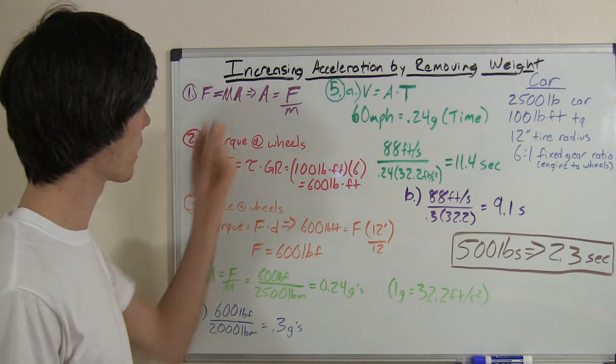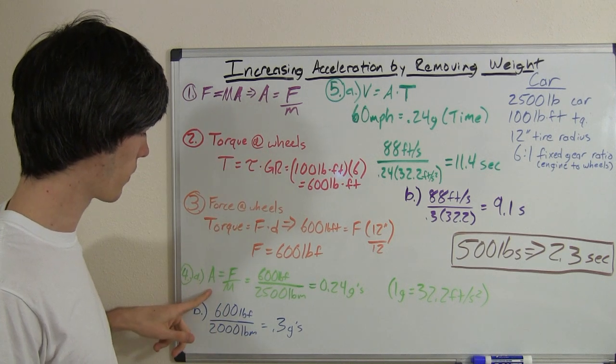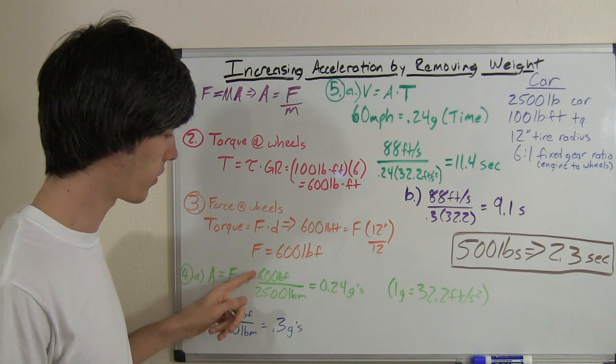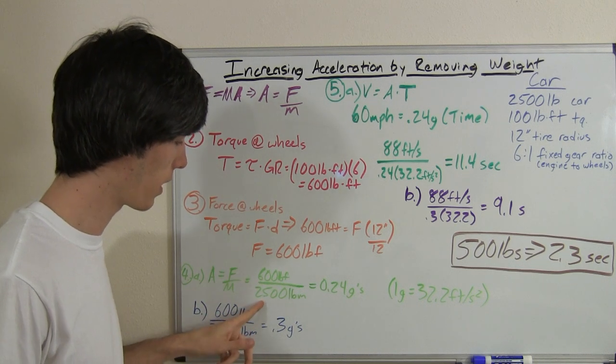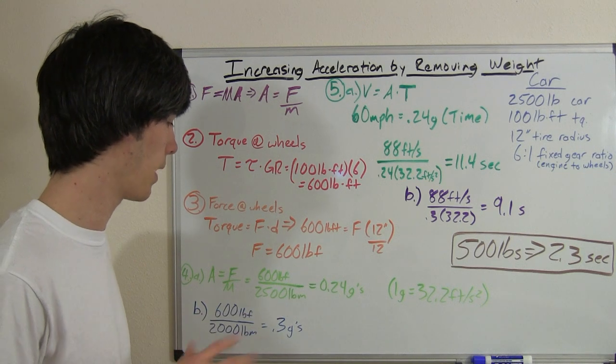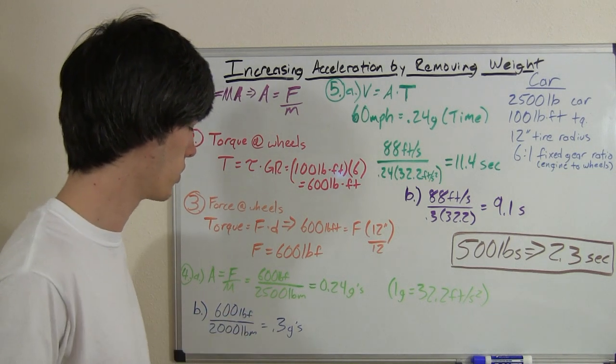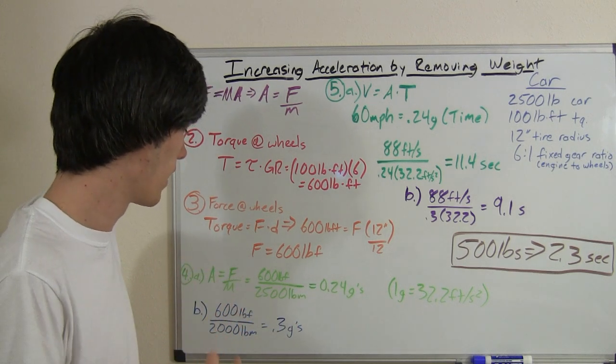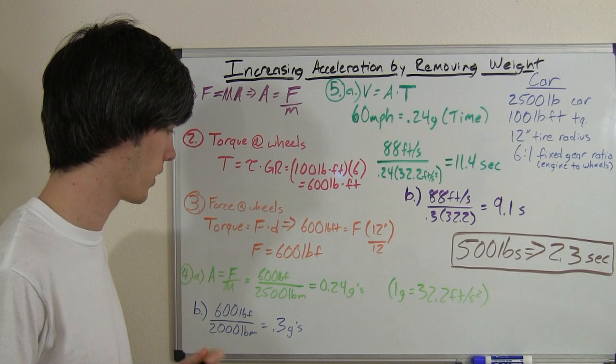All right. So back up here, step number four. We've got acceleration equals force divided by mass. We've got a 600 pound force divided by a 2,500 pound mass. Now 2,500 pound mass is kind of a not really a unit, but we are here on the outer shell of planet Earth at sea level, and we can basically use this logic here.